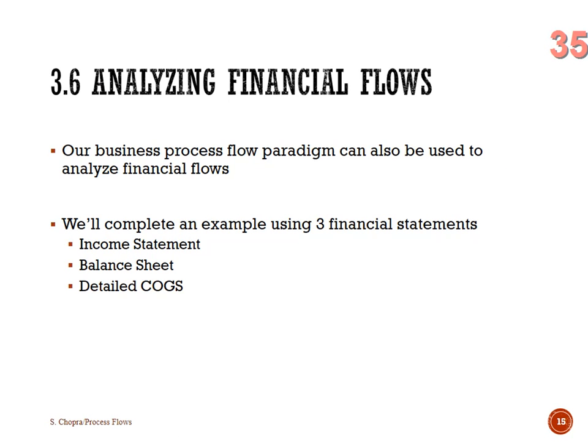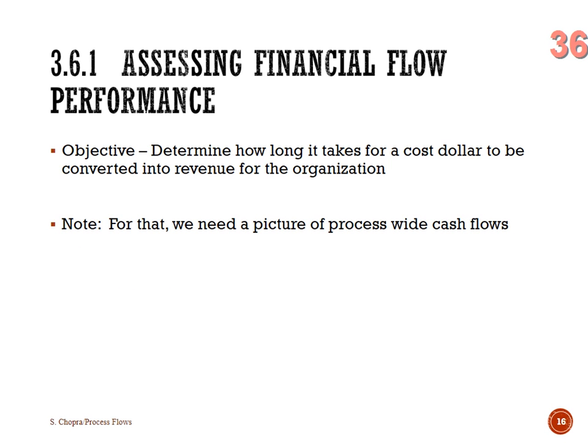We can also use this business process flow paradigm to analyze financial flows. We need three financial statements: an income statement, a balance sheet, and a detailed cost of goods sold. For most publicly traded companies you can get that information. We're going to determine how long it takes for a cost dollar — when I spend a dollar, how long does it take to be transformed into revenue?